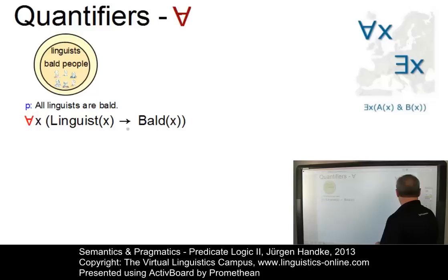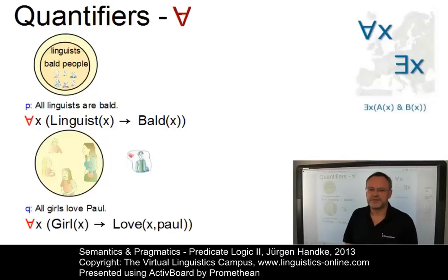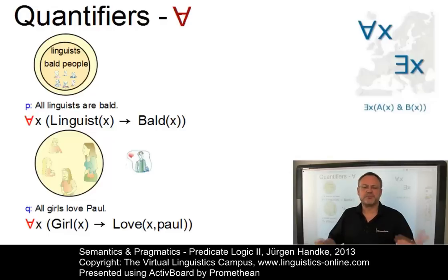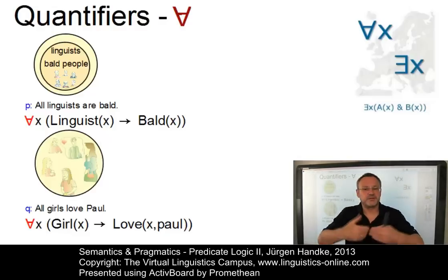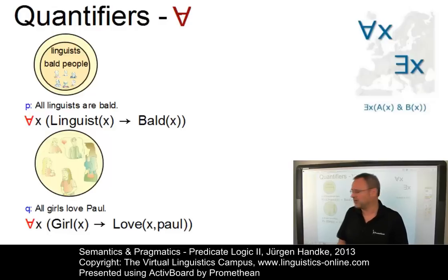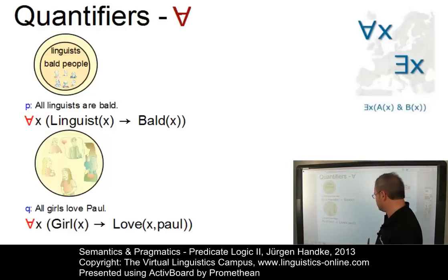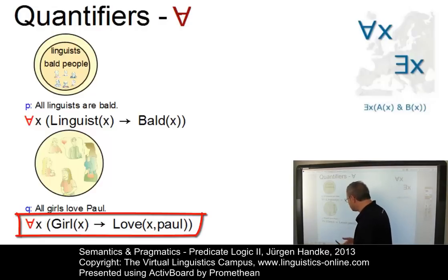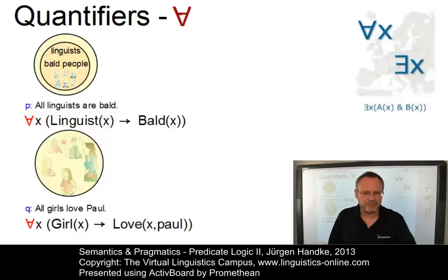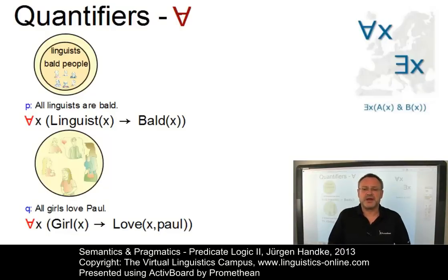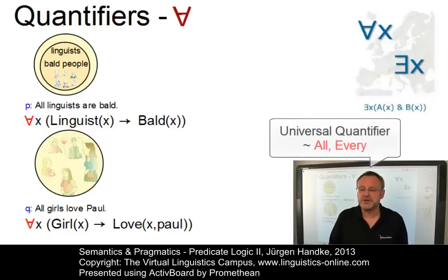Here is another example: 'All girls love Paul.' Paul is in the focus of all girls; there is no girl who does not also love Paul. The representation in predicate logic reads: 'For all elements X, it holds that if X is a girl, then X also loves Paul.' To summarize, the universal quantifier is an operator in predicate logic that stands for any individual or object in the universe of discourse — everything we speak about in a certain context. In ordinary language, it corresponds roughly to 'all' and 'every.'